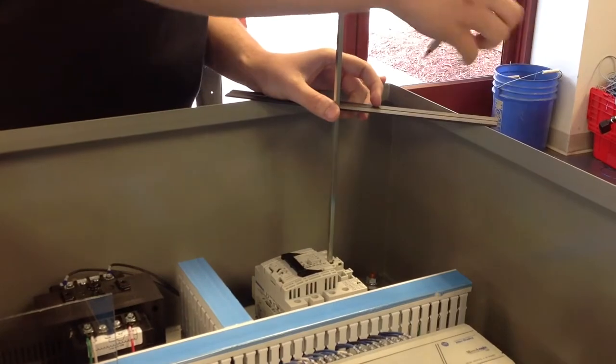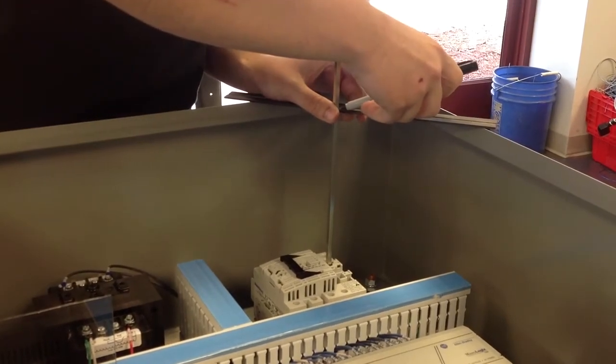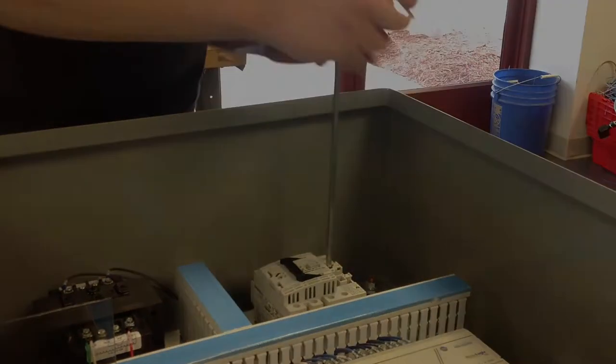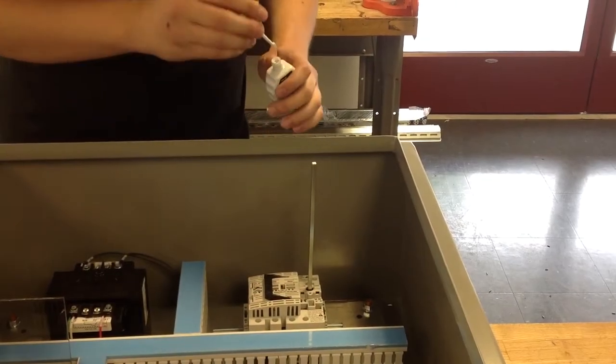First, you need to measure out the length of the arm that you need and cut it. Once it's cut, apply a little bit of whiteout to the tip.